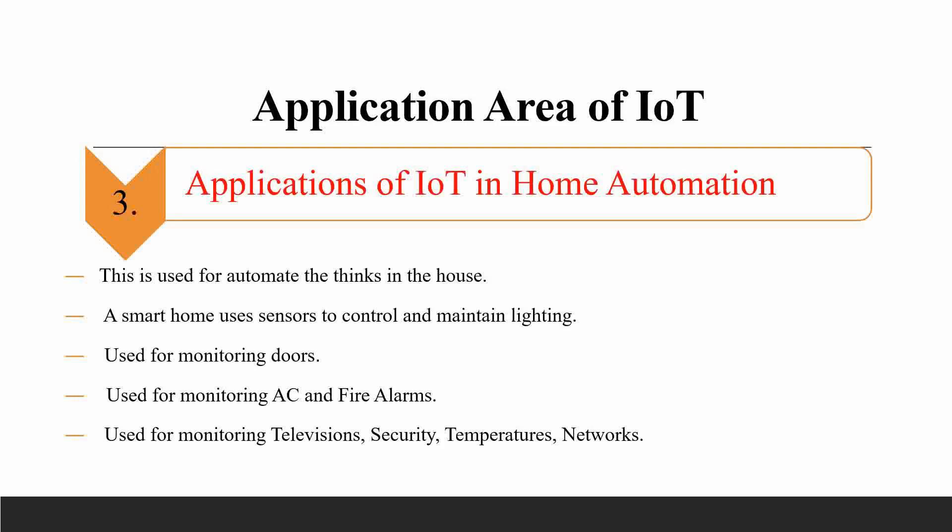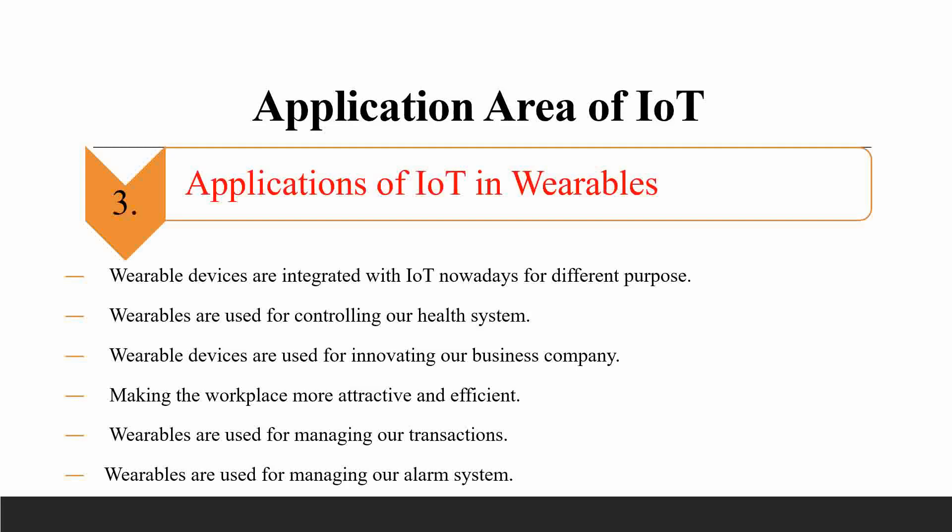It is also used for monitoring TV security, temperatures, and networks. With the help of IoT, we can monitor and manage these home applications. IoT is used for different purposes including controlling our health systems, which are monitored and controlled.